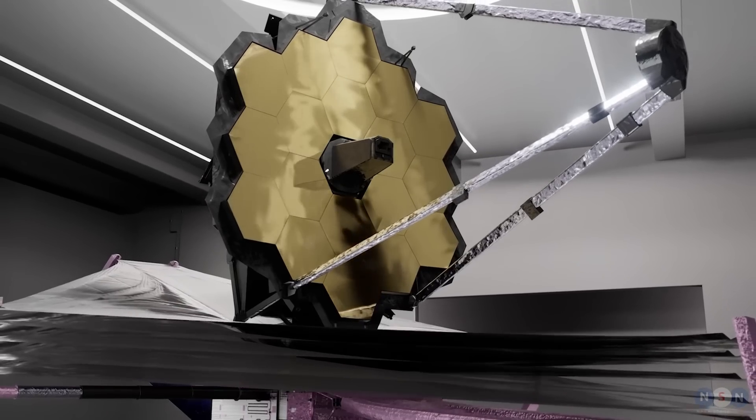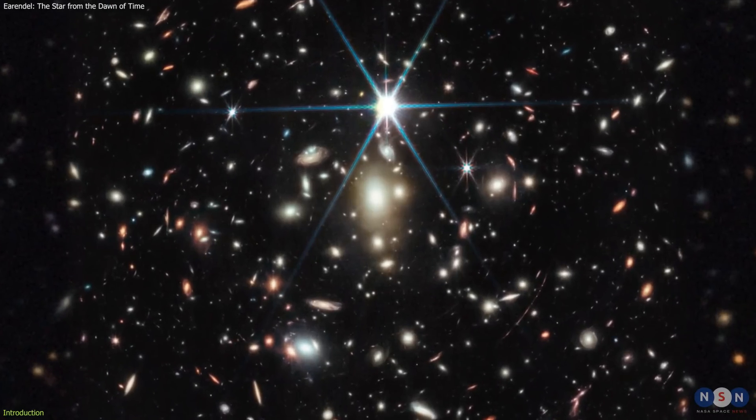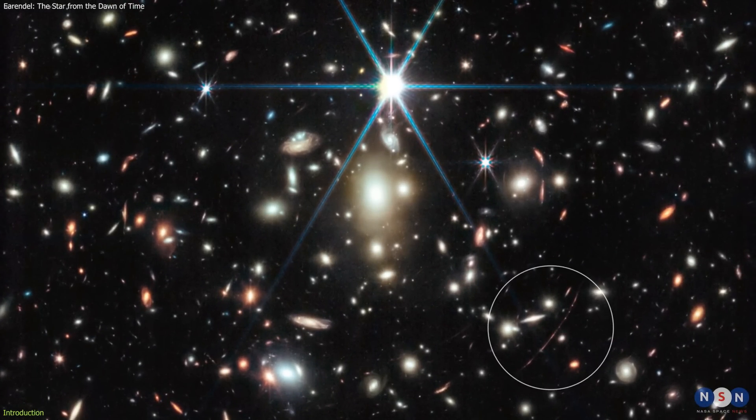Today, we have some exciting news to share with you. NASA's James Webb Space Telescope has revealed the colors of Earendel, one of the most distant stars ever detected by humans.